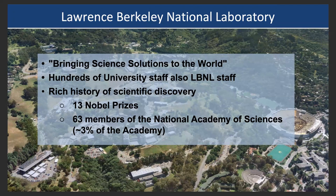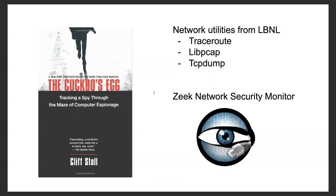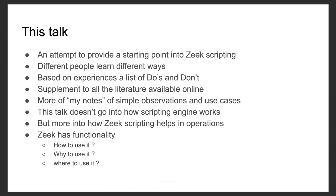I come from Lawrence Berkeley National Lab — it's a pretty awesome place to work at. We're up on the hill right next to UC Berkeley campus. The lab is known for Nobel Prizes, but for me, it's more like the Cuckoo's Egg story, which happened at the lab. Network utilities like traceroute, libpcap, and Zeek all came from LBNL. This talk is my attempt to give just a beginner's overview of how you even start into Zeek scripting.